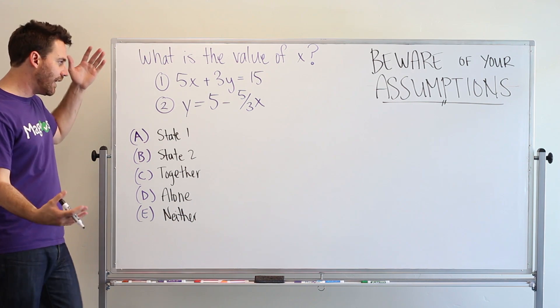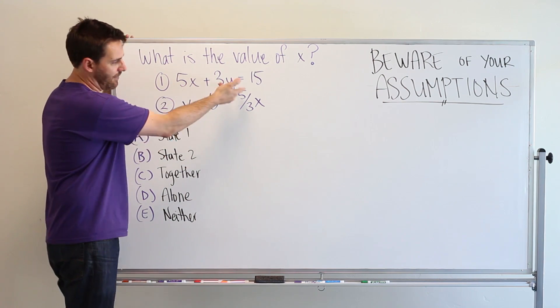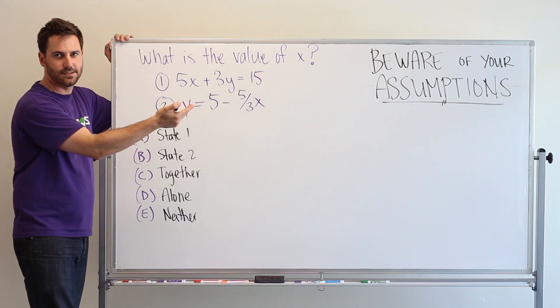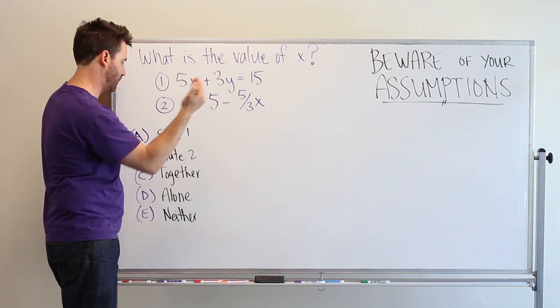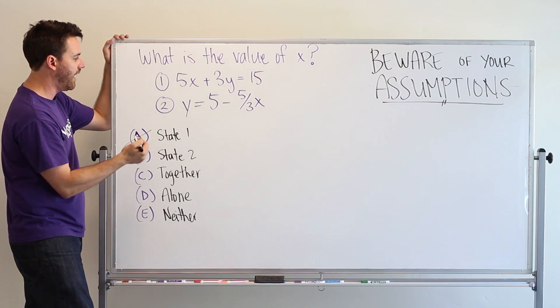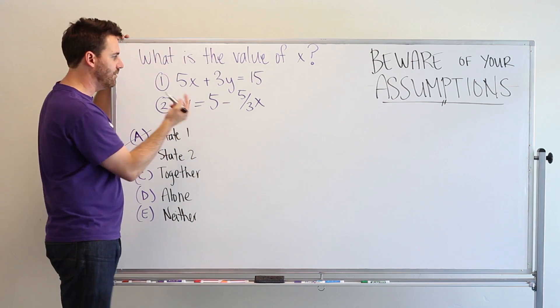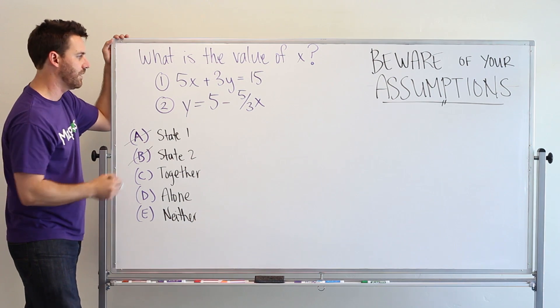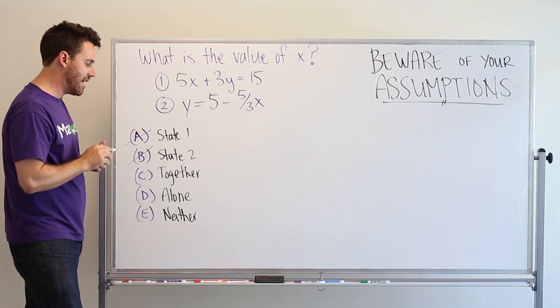So, we can quickly eliminate a couple of answer choices. I can see in statement one, I'm not going to be able to figure out what the value of x is, excuse me, because I still have this y. So, eliminate A. Look at statement two, again, same thing, have two variables. I'm not going to know what the value of x is with that y in there.